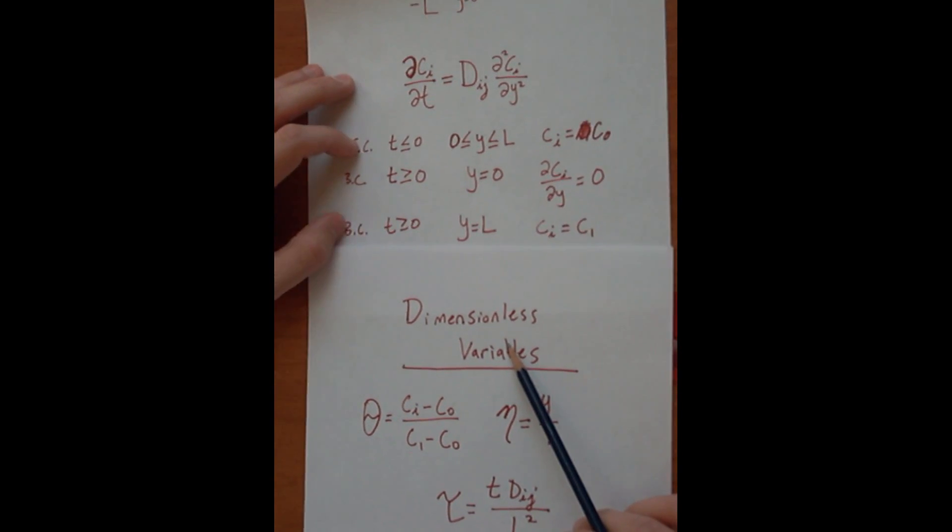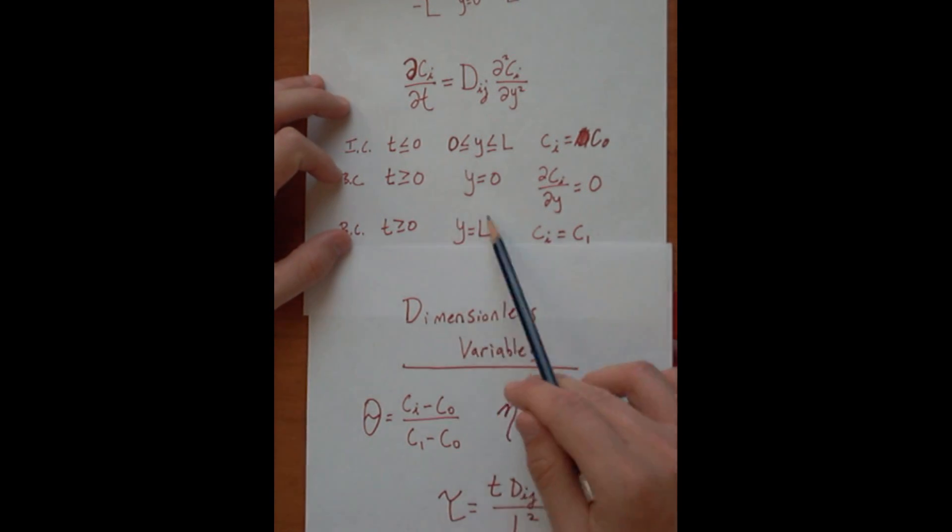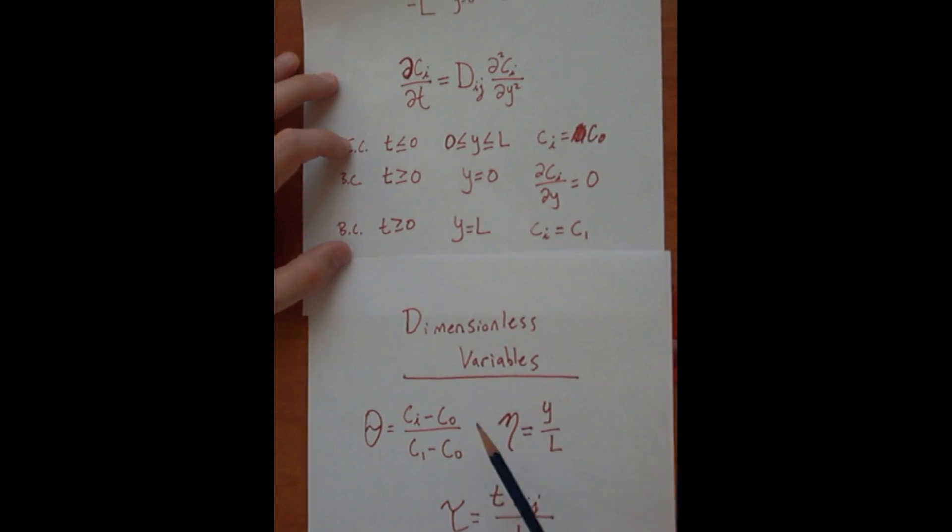You can also use these dimensionless variables to convert these initial conditions and boundary conditions into non-dimensionalized initial conditions and boundary conditions, and that's what I'm going to do now.